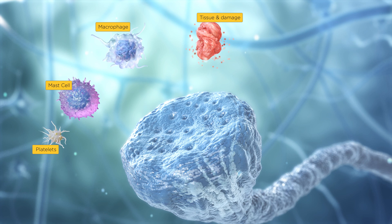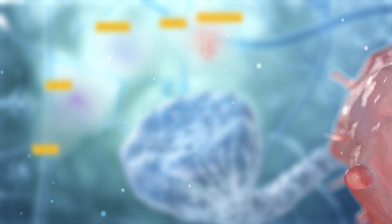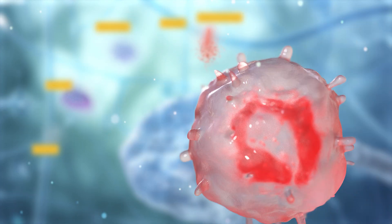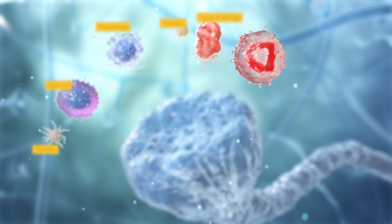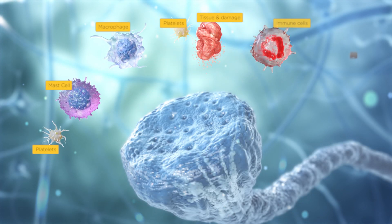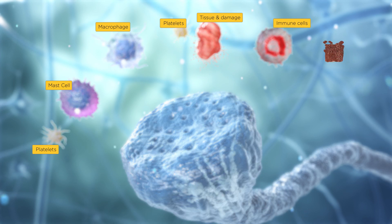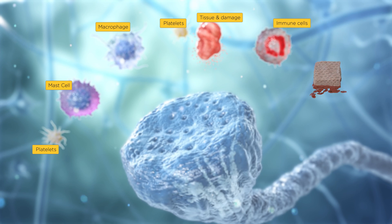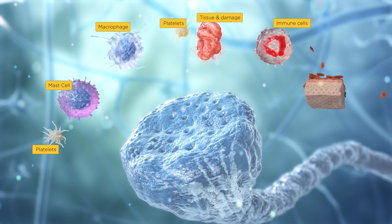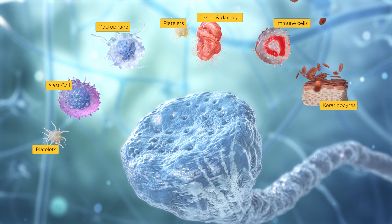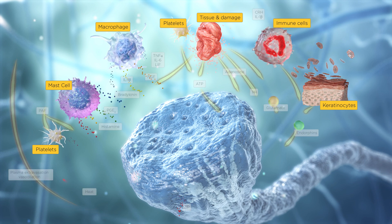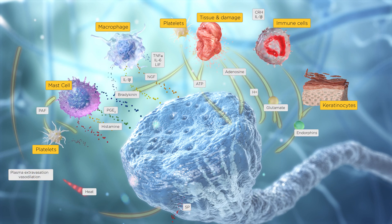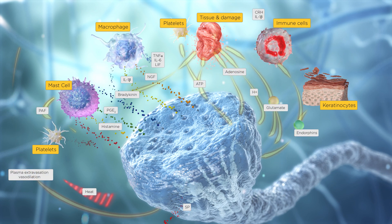Glutamate is the predominant primary afferent neurotransmitter, eliciting fast, excitatory responses in postsynaptic neurons in the dorsal horn of the spinal cord. ATP enhances glutamate release during firing of presynaptic autoreceptors and depolarization of postsynaptic dorsal horn receptors.